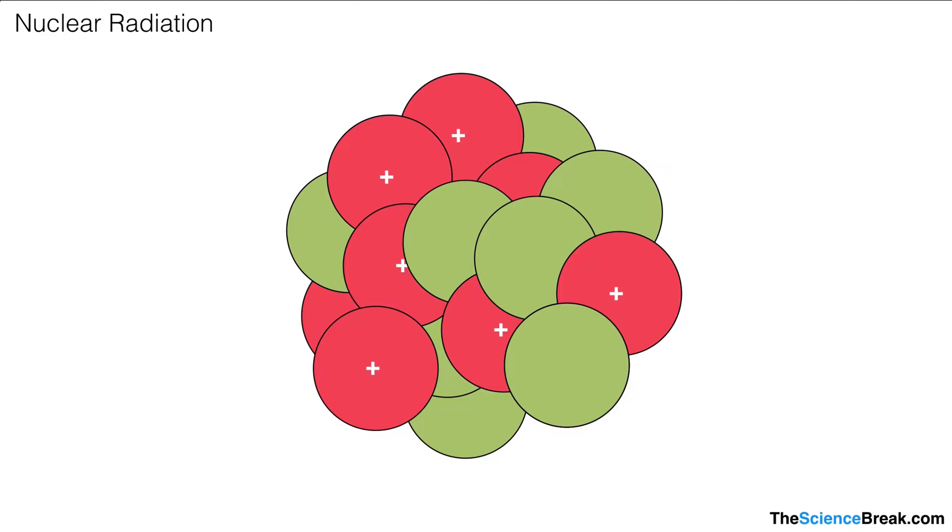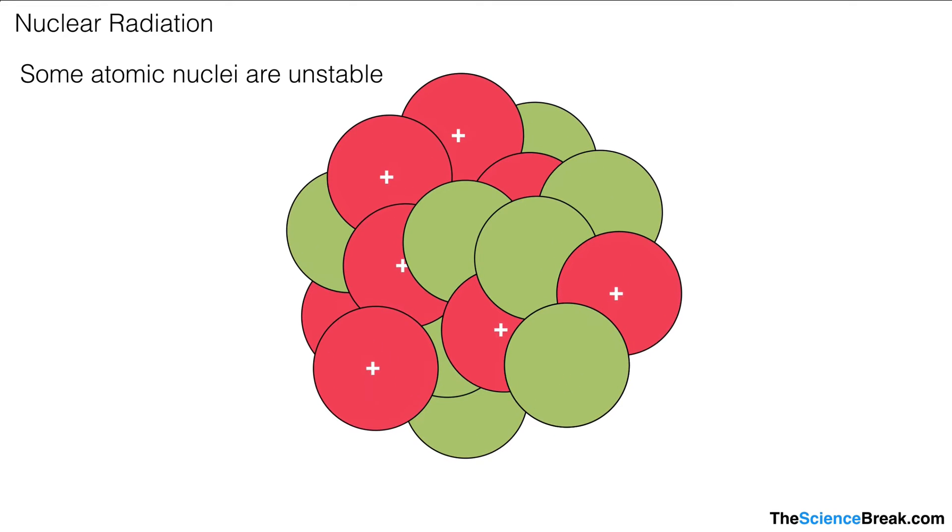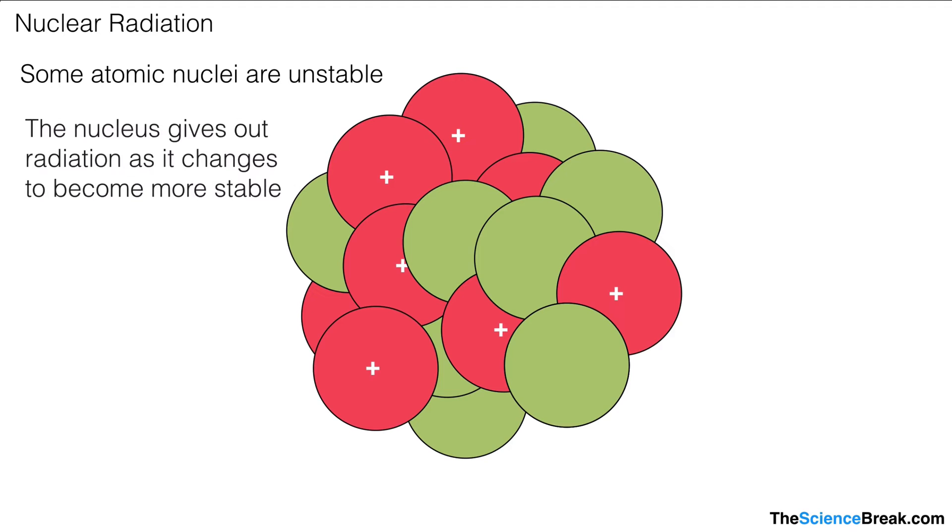So what do we mean by radioactivity? Well, here we have a rather large nucleus of one particular type of atom. Some atomic nuclei are unstable, and in order to reach a stable state, the nucleus will give out radiation as it changes to become more stable. When that happens, we describe that process as radioactive decay.